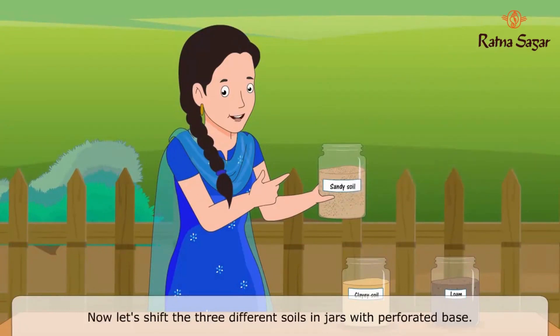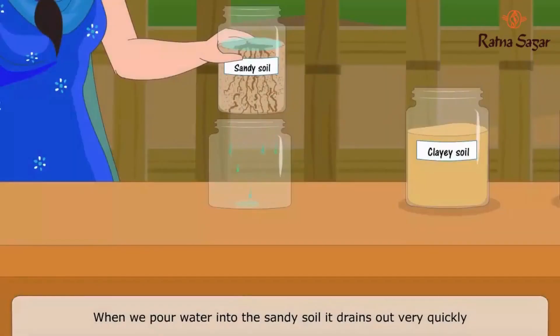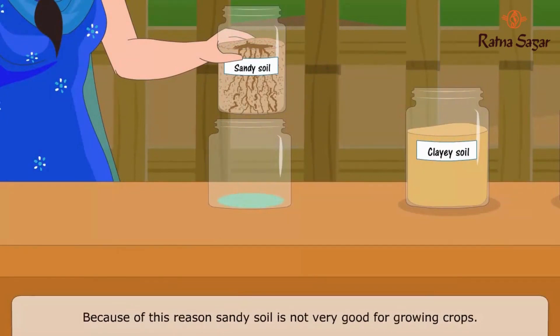Now let us sift the three different soils in jars with a perforated base. When we pour water into the sandy soil, it drains out very quickly because sandy soil cannot hold water or nutrients for long. Because of this reason, sandy soil is not very good for growing crops.